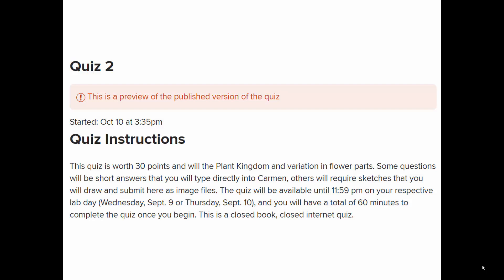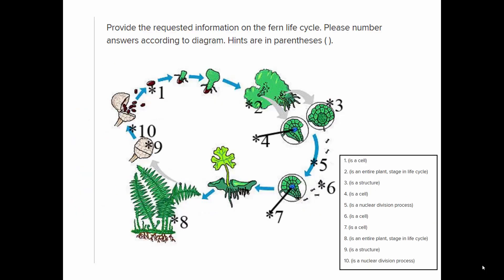Quiz two has something to do with the plant kingdom and variation in flower parts. Now a little more detail about the plant life cycle with actual drawings of plants — this is a fern life cycle.